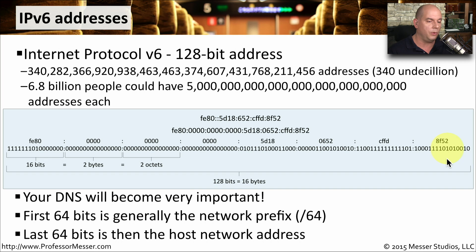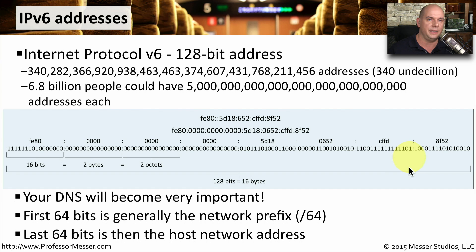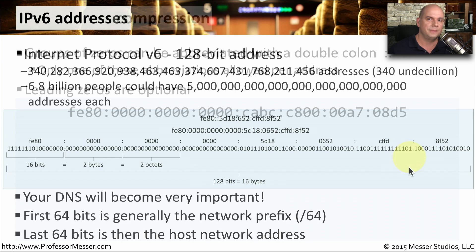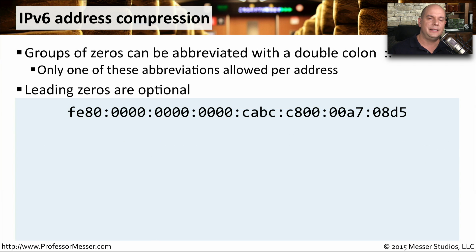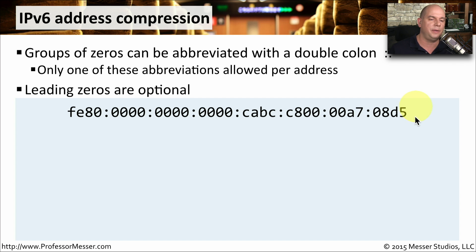The last 64 bits are usually used for the host addresses on that particular network. So whenever you're looking at an IPv6 address, you can separate it right in the middle — on the left side is the network address, on the right side are all of the host IDs. If we were to write out the entire IPv6 address, they can be quite long, with all the zeros shown here.